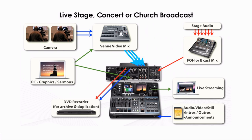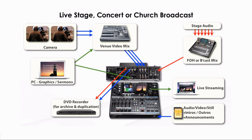Loop-throughs on the video mixer bring those individual sources to the VR5. Audio comes either from the front-of-house venue mixer or is split via a broadcast mix. Main outputs of the VR5 are sent to a DVD recorder for archive or duplication immediately after the event. The same main output is sent to a streaming encoder for easy live broadcast to the internet.